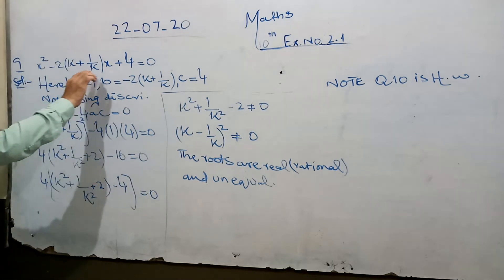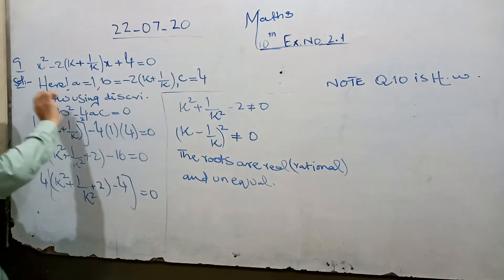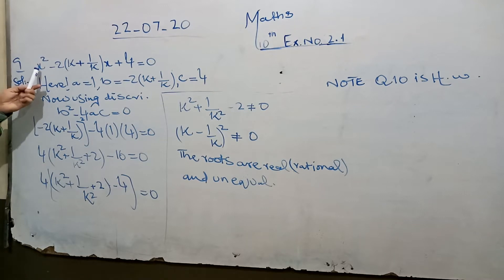x² - 2(k+1)/k x + 4 = 0. My brother, this is already in standard form of a quadratic equation. We have to find a, b, and c values.